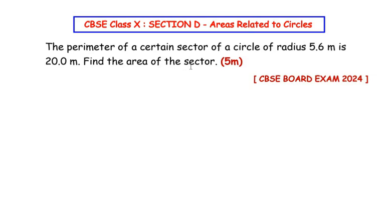Find the area of the sector. Let us try to understand the question by using a rough figure first. The perimeter of a certain sector of a circle - here you can see we have drawn a circle with center O and we have drawn a sector out of it, that is sector AOB.